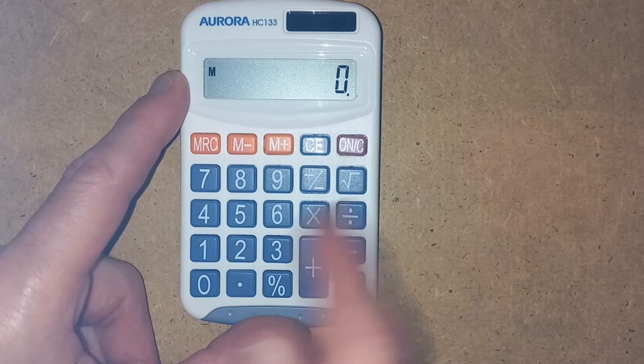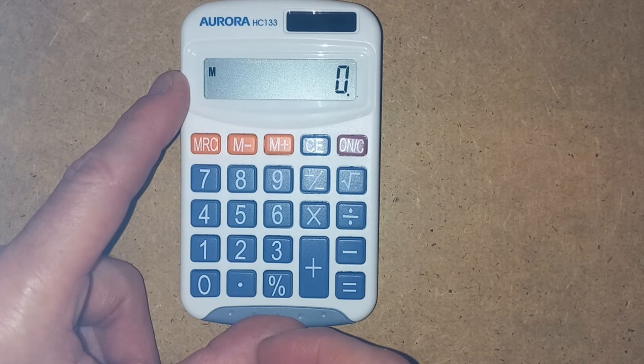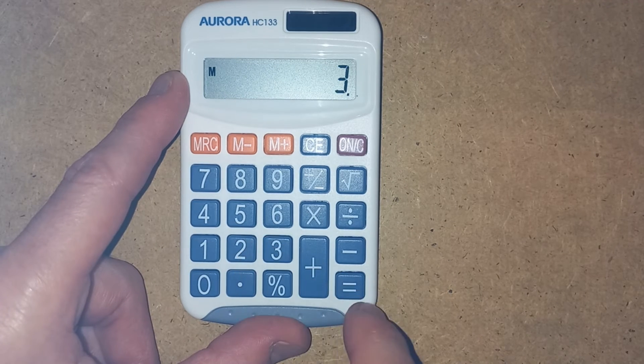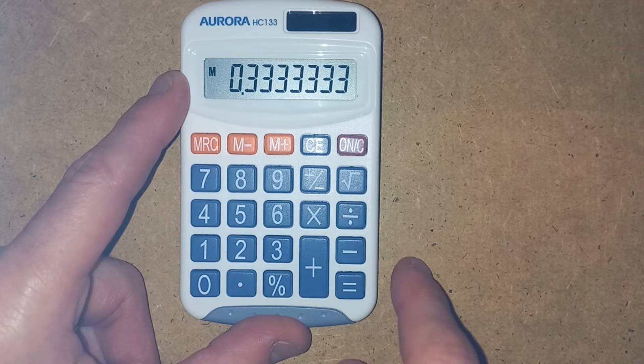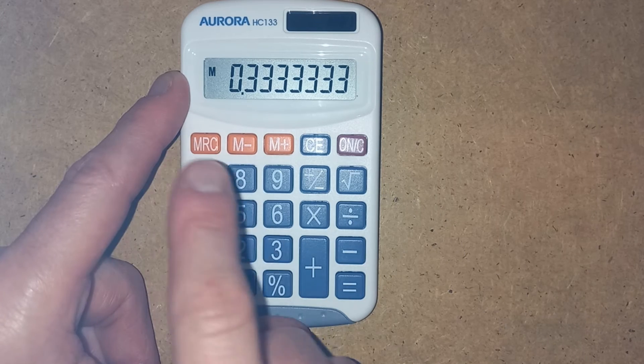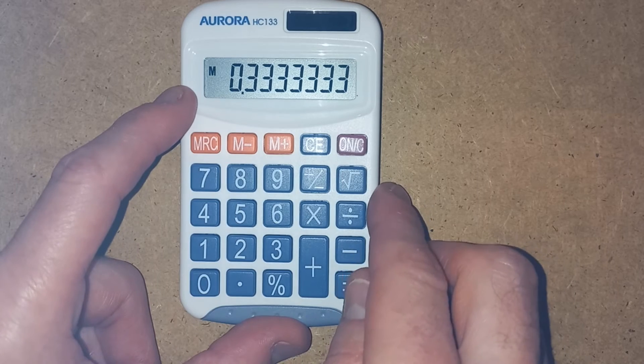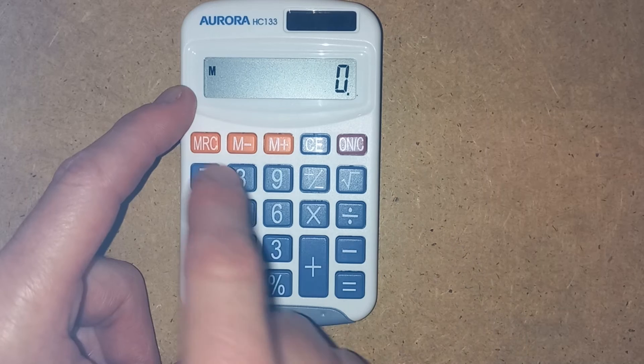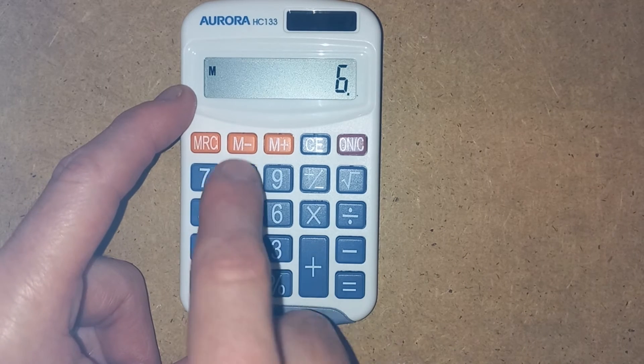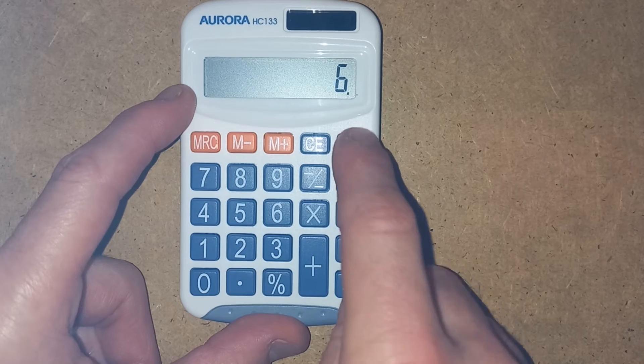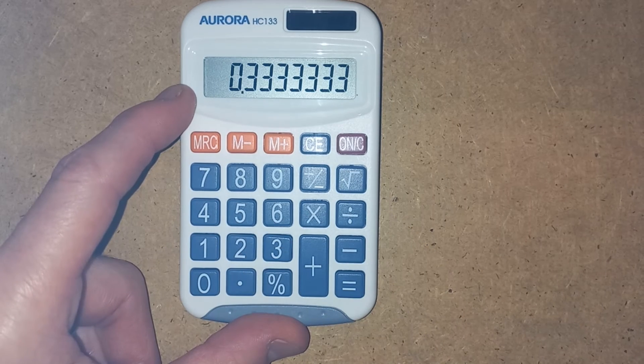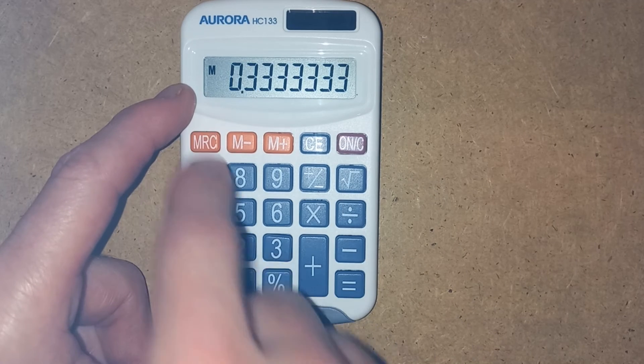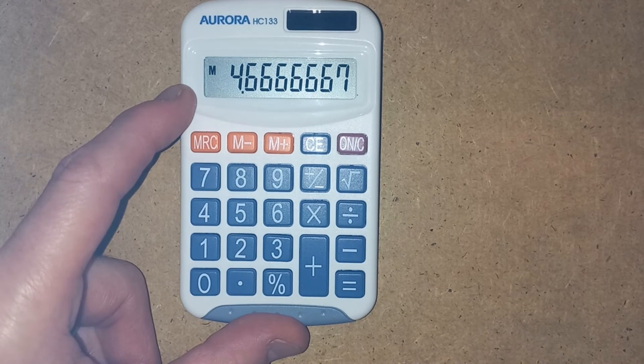So I've stored it in. For example, again, if we want to do, I don't know, 5 minus a third. So we could do our 1 divided by 3, get our third. We could then put that in the memory. Ah. Now, we've already got something in the memory. So if I want to put something new in the memory, what I first need to do is recall it, use the M minus to clear the memory. And now I can do my 1 divided by 3, add it to the memory, 5 minus memory recall, and then we get our answer.